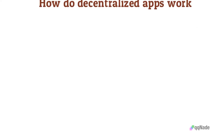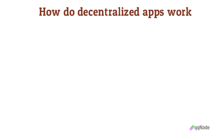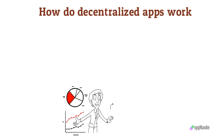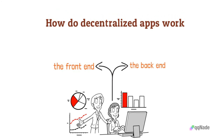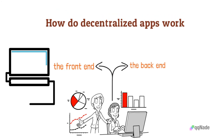How do decentralized apps work? To understand the basics of how a decentralized app works, we need to go into a little software design. A regular app has two main parts: the front end and the back end. The front end deals with what the user sees. For example, on Twitter, your feed and everything you can see is the front end.